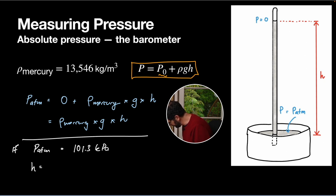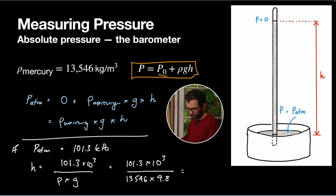If we rearrange our equation we'll get h will be 101.3 divided by density times g, this is times 10³ because it's kilopascals. So it's going to be 101.3 × 10³ divided by 13546 times 9.8, which equals, well if you do the calculation you'll find that is about 0.76 meters or 760 millimeters. It's just a little bit less than a meter tall if you're going to make a barometer this way.